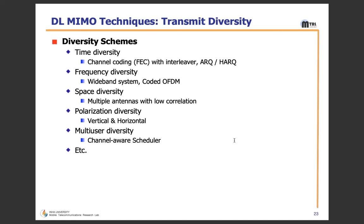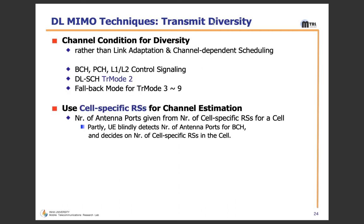There are two terms: link adaptation and channel-dependent scheduling. Link adaptation denotes matching of modulation, coding, and other signal and protocol parameters to conditions on the radio link. Channel-dependent scheduling is used in HSPA for similar reasons as in LTE, such as rapid adaptation to varying traffic and radio channel conditions. Regarding transport channels: BCH (Broadcast Channel) maps to Broadcast Control Channel, providing system information to all mobile terminals. The Downlink Shared Channel (DL-SCH) is the main channel for downlink data transfer.